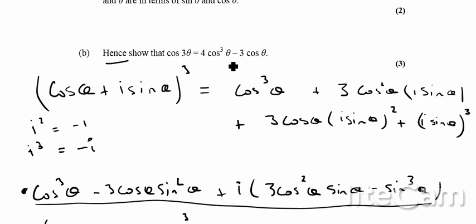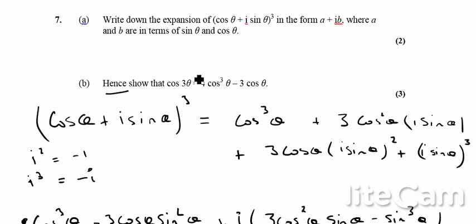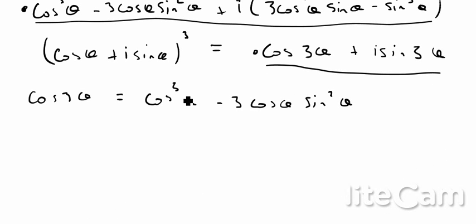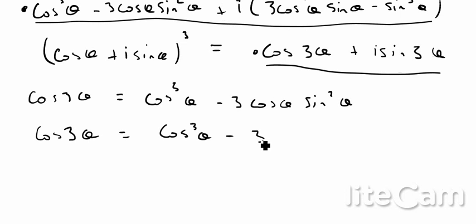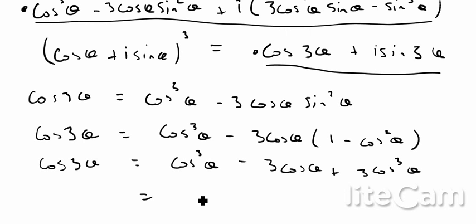We want 4cos³θ - 3cosθ, and we have cos³θ - 3cosθ sin²θ. We notice that sin²θ can be converted using sin²θ = 1 - cos²θ, so we rewrite it as cos³θ - 3cosθ(1 - cos²θ), which gives cos³θ - 3cosθ + 3cos³θ, and therefore 4cos³θ - 3cosθ, as required.